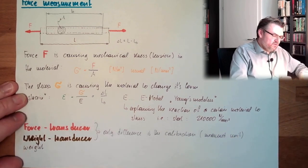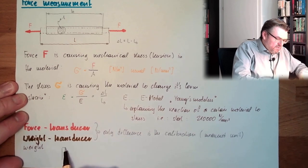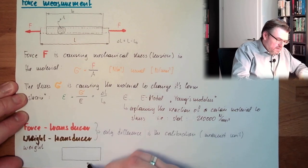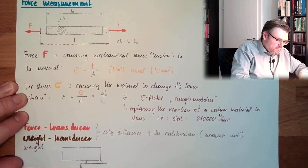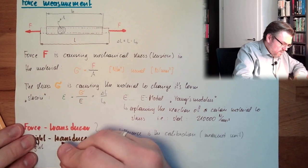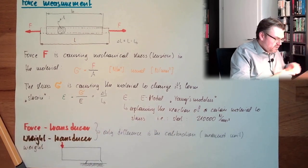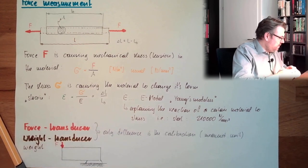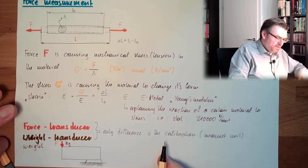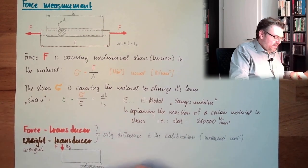How such transducers look like? They usually look like somehow like this. They are mounted to a fixed point. Here we apply the force somewhere here. Here is the force which is applied or the weight which is applied. It does not really matter. Like I said, the only difference is only the calibration.